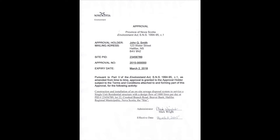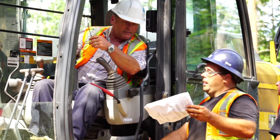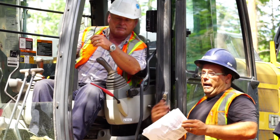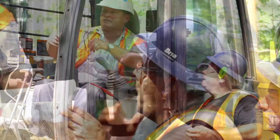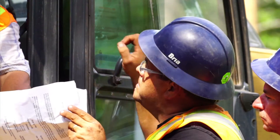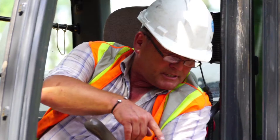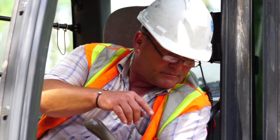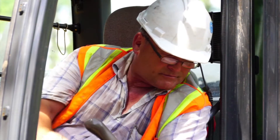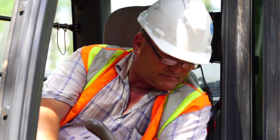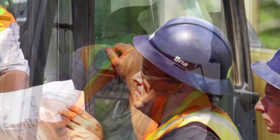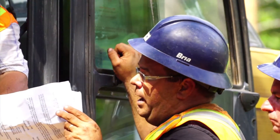The installer obtains a copy of the on-site sewage approval and reviews the plan for the property. The installer contacts the qualified person and advises that he is installing the system and the date that he will have the system constructed and left open ready for inspection.